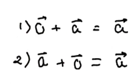We will discuss some properties of zero vector. The sum of zero vector with any vector will give the same vector. Thus, zero vector plus A vector will be equal to A vector and A vector plus zero vector will be equal to A vector.